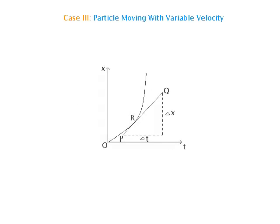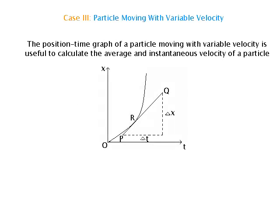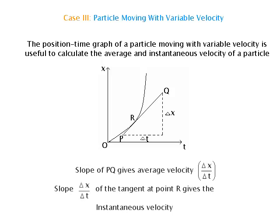Case 3 — Particle moving with variable velocity. The position-time graph of a particle moving with variable velocity is useful to calculate the average and instantaneous velocity. The slope of chord PQ gives the average velocity Δx upon Δt, while the slope of the tangent at point R gives the instantaneous velocity.